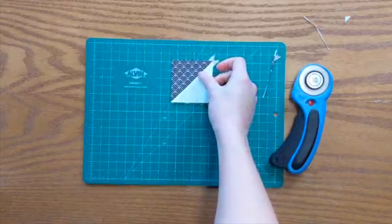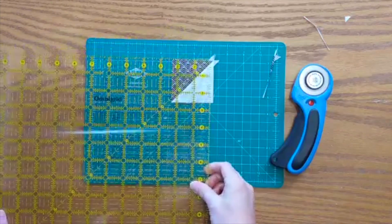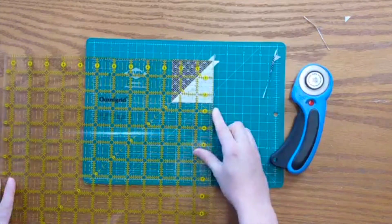We're going to have to flip our half square triangle over and then we're going to do the same thing again. Now we're going to find that line here.